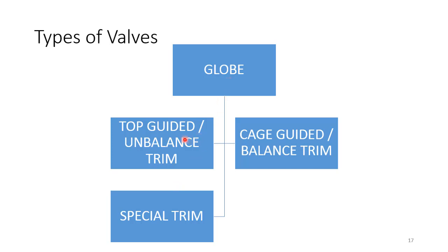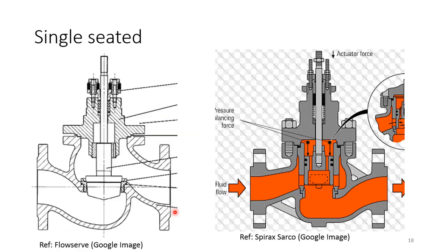A globe valve can be top guided unbalanced — just remember top guided — or cage guided. We will discuss these in detail. Single seated means there is only one seat. Images are taken from Fischer and Spirax Sarco. In top guided, the plug is guided from the top, hence it is top guided. It is also called unbalanced because the forces generated by the fluid flow are unbalanced in nature — this force has to be overcome by the plug.